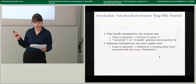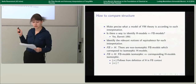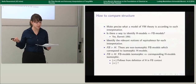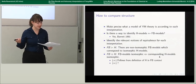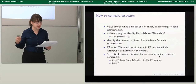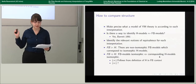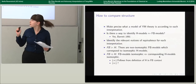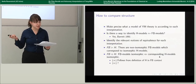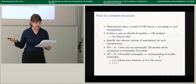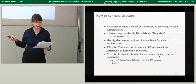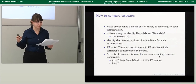How are we supposed to evaluate claims of relative structure between the two interpretations? We first need to make precise what a model of Yang-Mills theory is according to each interpretation. We can then ask if there's a natural correspondence between holonomy models and fiber bundle models — and such a correspondence is in fact given by Jonathan Barrett in 1991. But this correspondence doesn't tell us much more than that both interpretations can describe the same set of physical systems.